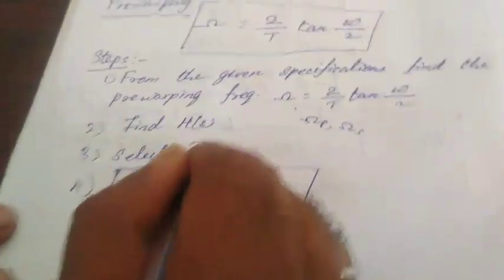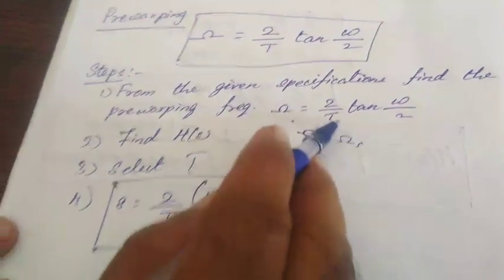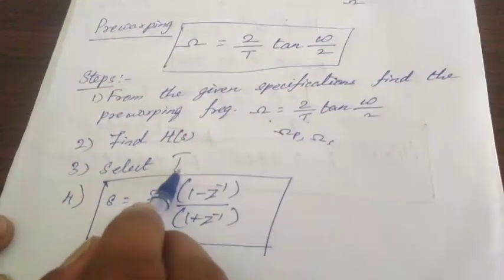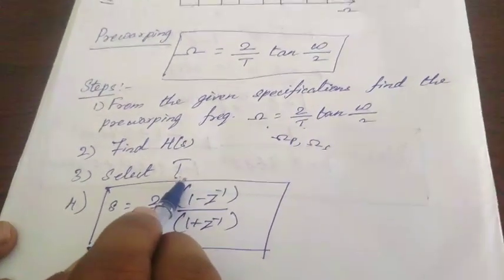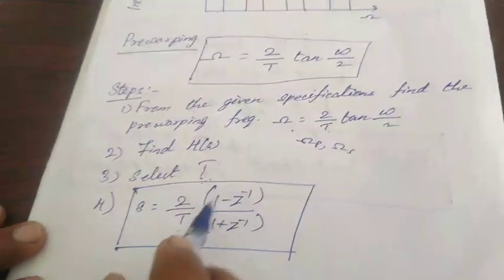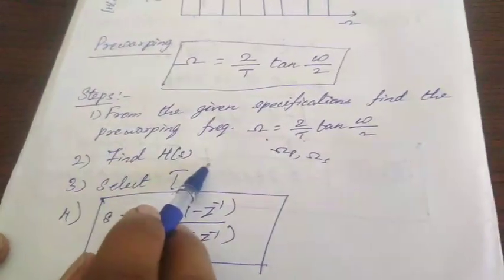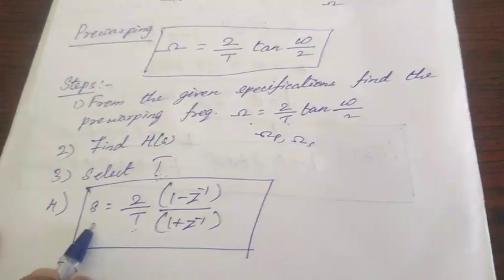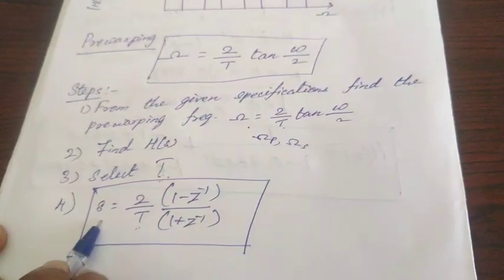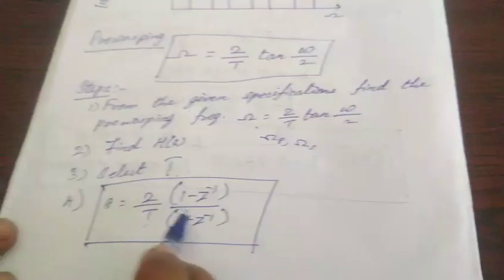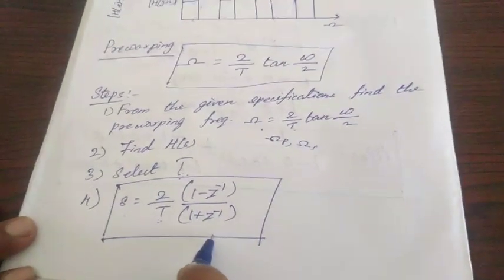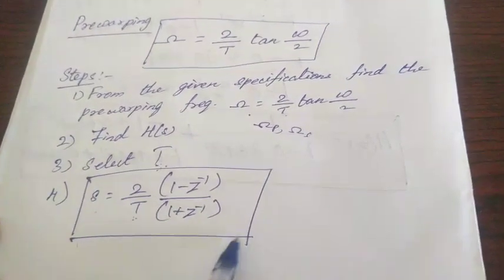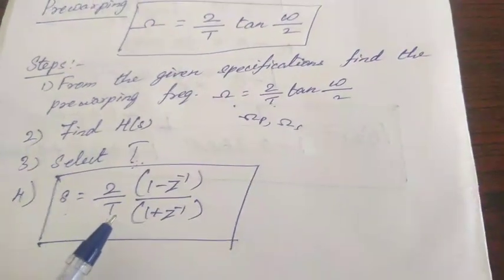Select the sampling period T. Once again you are confirming that, select the sampling period T. Then our final step is replace S value by 2 by T, 1 minus Z inverse divided by 1 plus Z inverse, and this one is called as bilinear transformation.